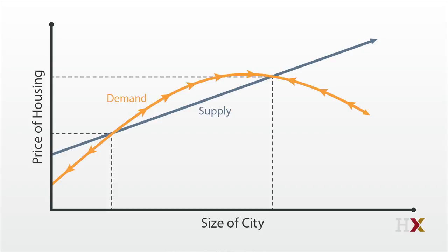Once there are agglomeration economies, city size can build on itself, and there may be multiple equilibria — one in which the city doesn't exist or is really small, and the other in which the city is really big. That suggests that the growth of any particular city in any particular spot might just be a matter of chance.